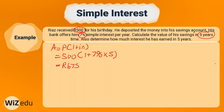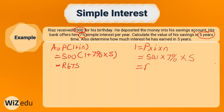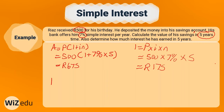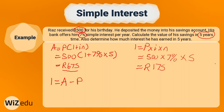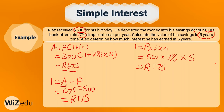To determine how much interest he earned in 5 years, there are two approaches. First, use the formula I = P × i × N: I = 500 × (7/100) × 5 = 175 Rand. Alternatively, subtract the principal from the accumulated amount: 675 − 500 = 175 Rand. Both methods give the same answer of 175 Rand, because the difference between the accumulated amount and the principal is exactly the interest earned.